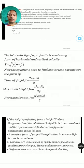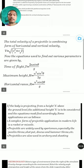The total velocity of a projectile is a combining form of horizontal and vertical velocity, so v = √(vₓ² + vᵧ²).